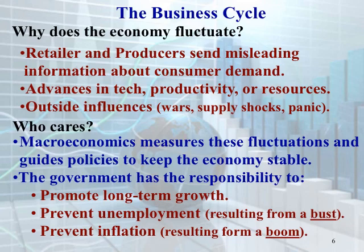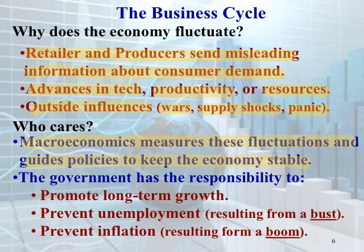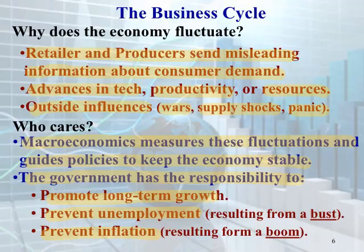Why does the economy fluctuate? Why do we have a business cycle? It's because retailers and producers sometimes send misleading information about consumer demand, or we have advances in technology, productivity, or resources, and outside influences like wars, supply shocks, or panic. Macroeconomics measures these fluctuations and guides policies to keep the economy stable. The government has the responsibility to promote long-term growth, prevent unemployment, and prevent inflation — the three goals of our economy.